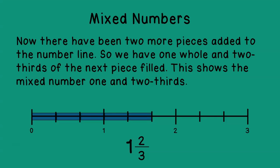Now what we've done is we've added 2 more pieces to the number line. So now, we have 1 whole, and then we have the 2 pieces that were added, so 2 thirds of the pieces are filled. So this shows the mixed number 1 and 2/3, because we have 1 whole section filled, and then 1, 2 of the 3 pieces filled, so 1 and 2/3.